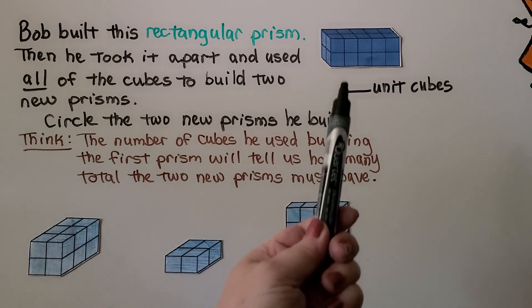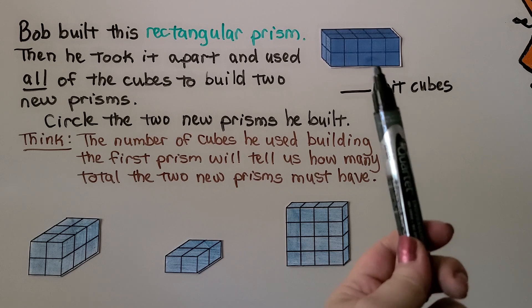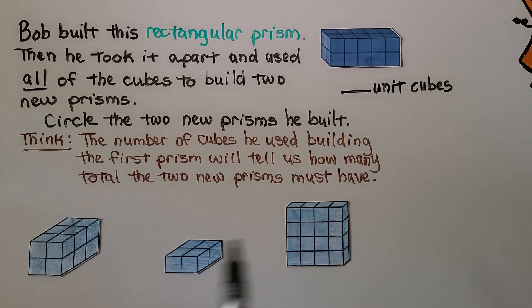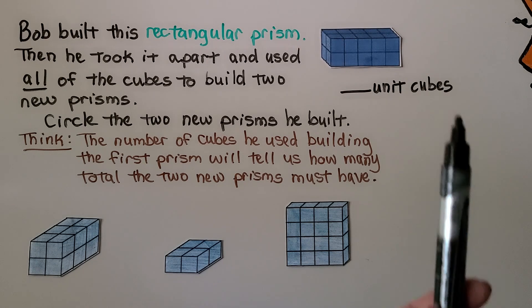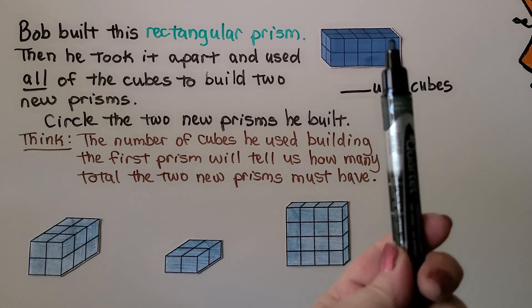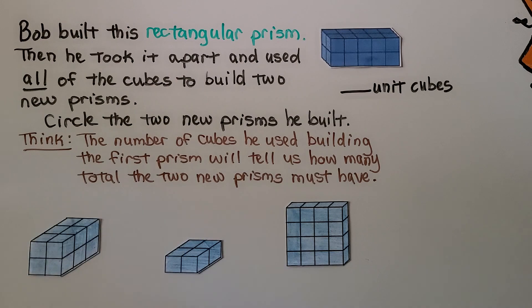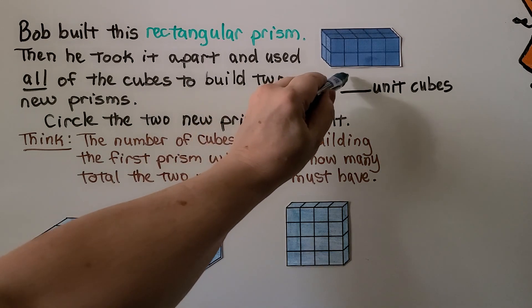Bob built this rectangular prism, then took it apart and used all of the cubes to build two new prisms. We need to circle the two new prisms he built. The top shows a row of five and another row of five — that's ten in two layers, ten plus ten. That means he used twenty unit cubes, so we need to find two prisms that have twenty unit cubes total.